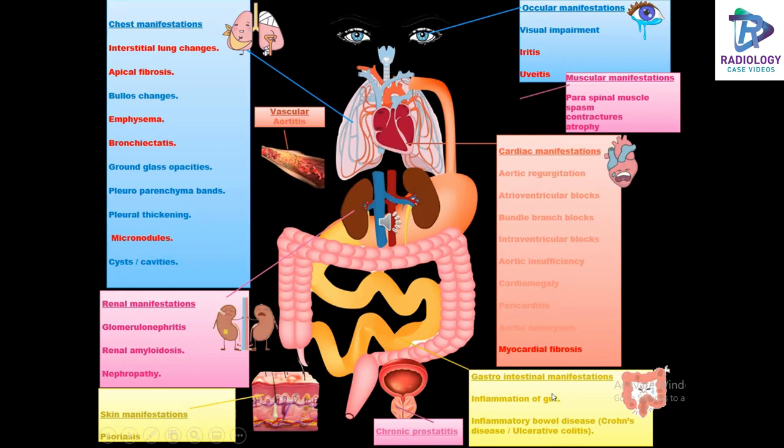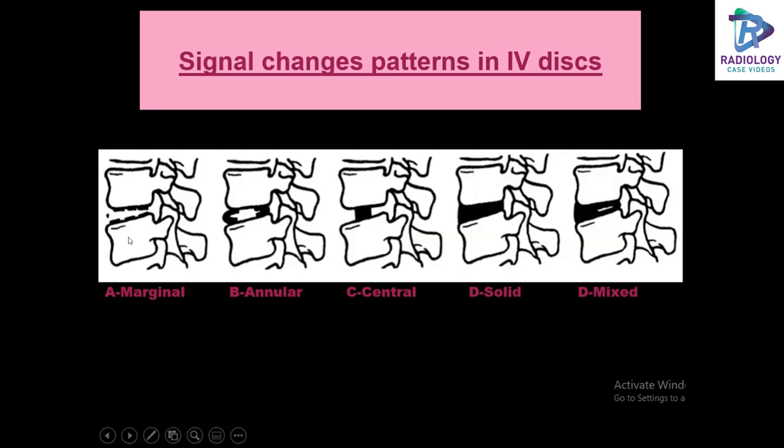In the prostate, patients present with chronic prostatitis. In the aorta, they present with aortitis. Signal change patterns in the intervertebral discs can be marginal, annular (peripheral), central, homogeneously solid, or mixed signal intensity.